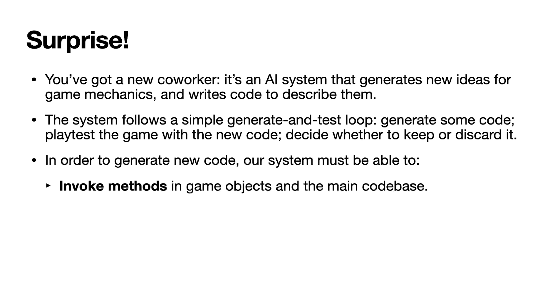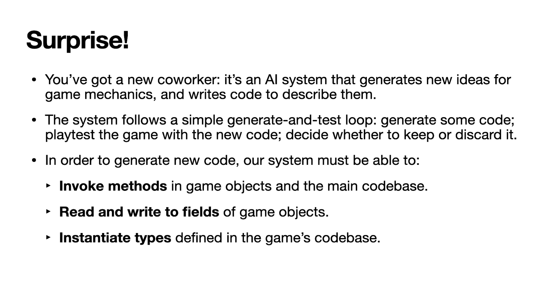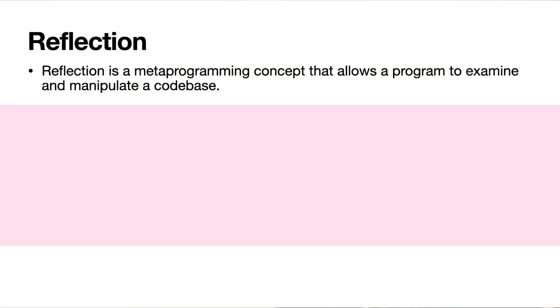First it needs to be able to execute methods in the game code and access the code that we've written and run it. It also needs to be able to read and write to fields and data inside the code base, and it's probably going to want to instantiate types we've defined — create new enemies or items for the player to find. To allow the AI to do this, we're going to let it use something called reflection. Reflection tends to be one of those things you don't need to know about until you really need to, so I'll give you a quick overview. Reflection is a metaprogramming concept that allows us to write programs that then edit and execute code elsewhere in the code base.